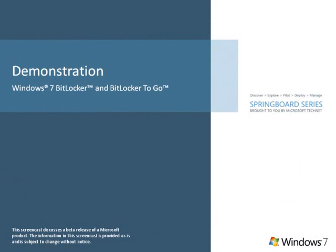As you've seen, Windows 7 addresses the continued threat of data leakage with manageability and deployment updates to BitLocker drive encryption and the introduction of BitLocker to Go — an exciting new feature that helps protect data stored on portable media such that only authorized users can read the data, even if the media is lost, stolen, or misused.